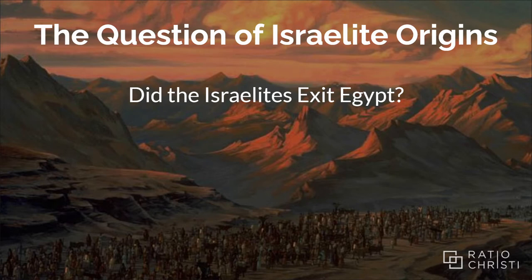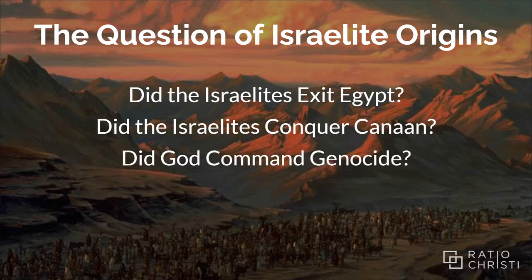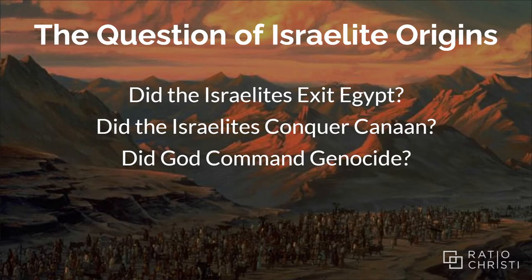This raises a host of questions. The first is the factual question: did the Israelites actually exit Egypt? The second is also factual: did the Israelites conquer Canaan? And then that second question leads to a significant moral question: did God command genocide of the Canaanites? These are huge questions, and I'll be transparent — this is the first semester we've attempted to answer all of them, so some of this may not be as polished as previous topics. For the next couple of weeks, these three origins questions are our focus.